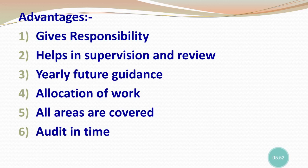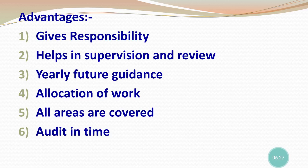Number one: Gives Responsibility. What happens in the audit program is that we can assign responsibility to a specific person. Because we will have a lot of assistants for our audit, we can divide each assistant's overall work — which we can call division of work. For example, I have assigned a person to do vouching. So he is only responsible for vouching. If he makes a wrong decision or mistake, then that person will be held responsible for it. I will not be responsible for any other person's work.